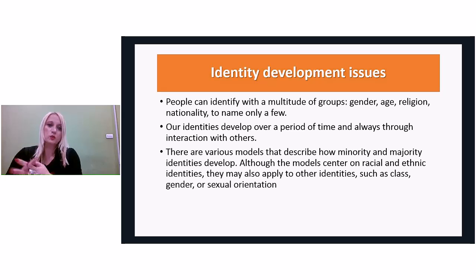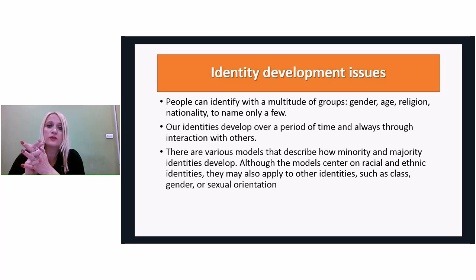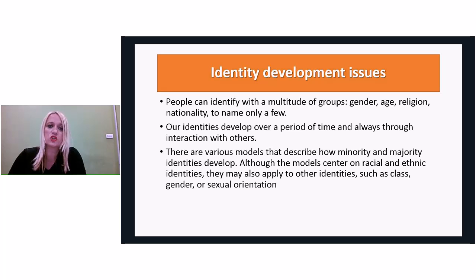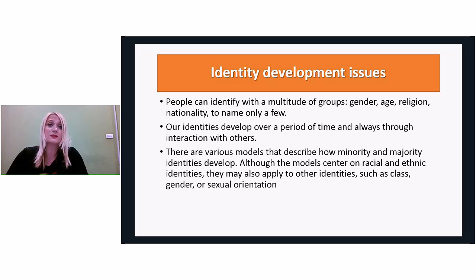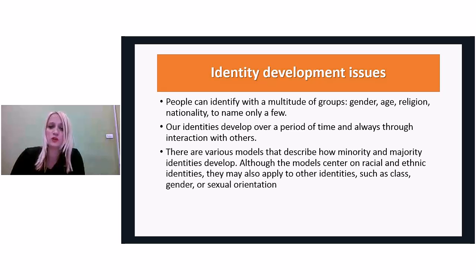Now we proceed with one very important part of intercultural communication theory — barriers in intercultural communication. We have stereotypes: beliefs about characteristics considered typical of a particular group. We have prejudice: a negative attitude or affective response to a particular group and its members. And discrimination: unfair treatment of members of a group on the basis of belonging to that group.